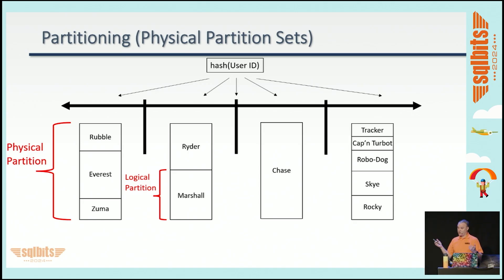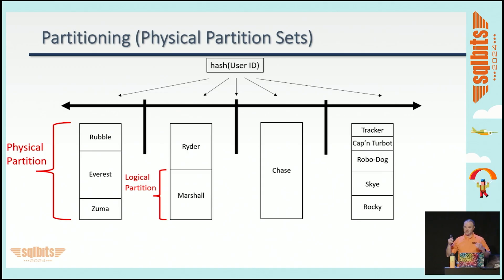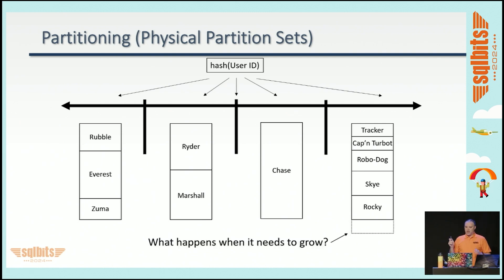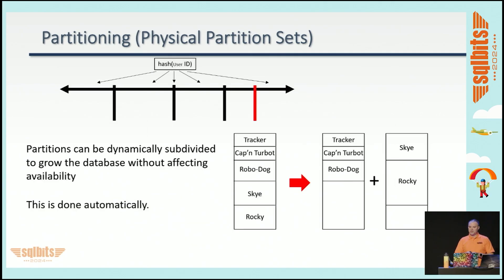There's not really an even distribution — for example, using Paw Patrol character names, Chase the police dog was really popular, so Chase might have more data and need his own partition, while Ryder and Marshall can share. What happens if we need to grow? Cosmos DB handles this: partitions are dynamically subdivided and the database can grow without affecting availability. Splitting a partition just happens automatically — pretty cool. But this all depends on a good design decision at the beginning: choosing a good partition key.